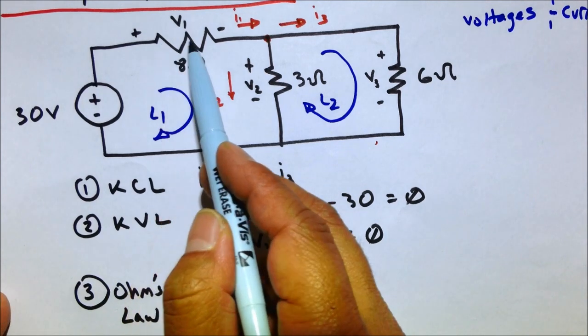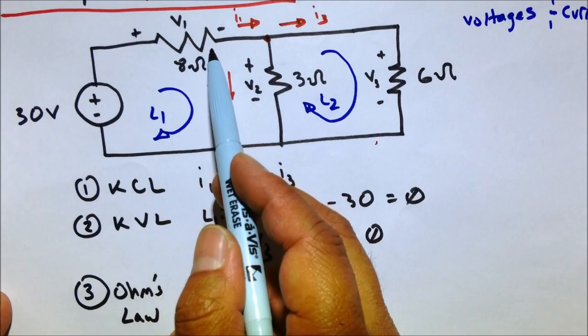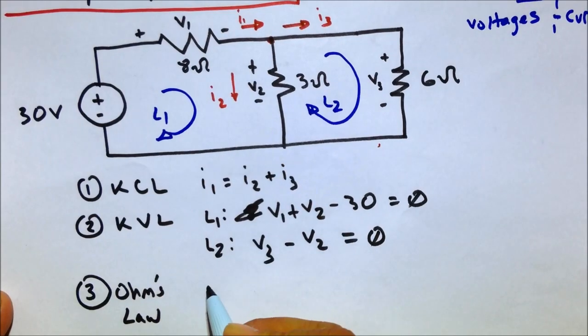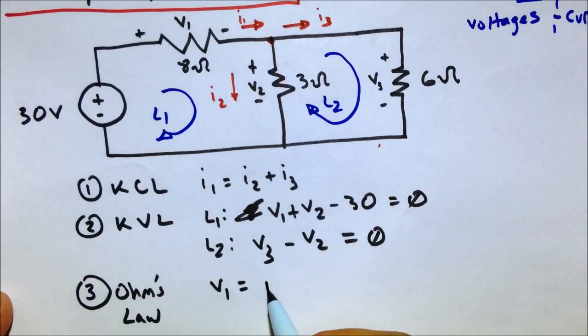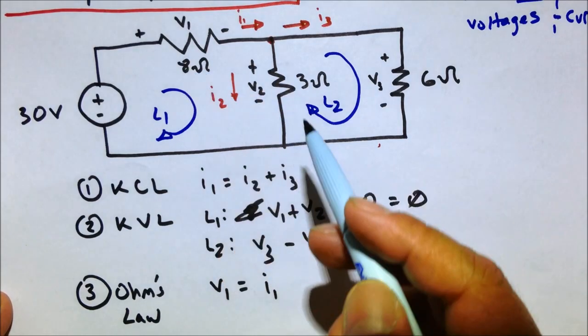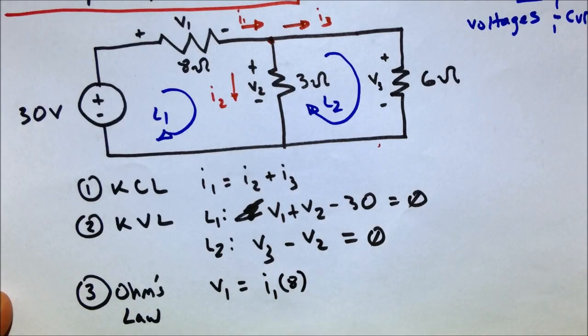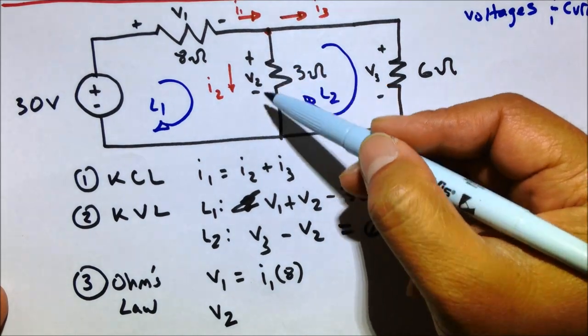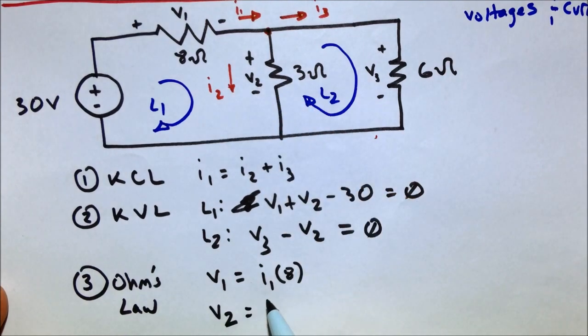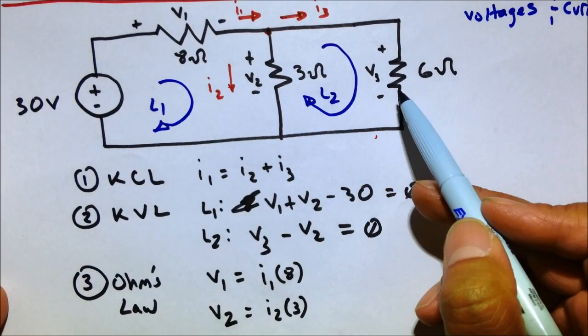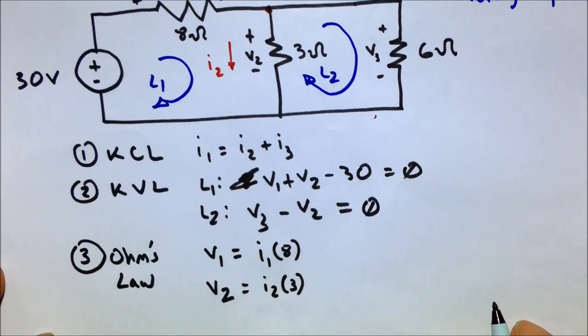And based off Ohm's law, we can develop a relationship or write a relationship between current, voltage, and resistance here. So V1 equals the current going through here, which we defined as I1, times that resistance which is 8. And then we know V2, which is that voltage down there, equals I, which we defined as I2, times this resistance which is 3 ohms.